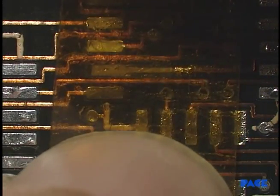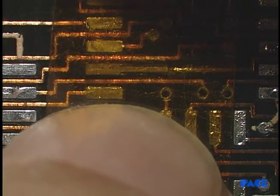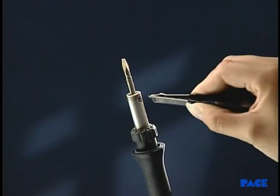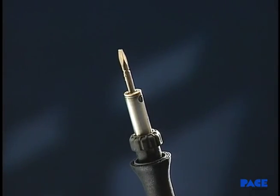Using Kapton tape, position the replacement land or trace combination. Install the appropriate Thermobon tip into the solder pen.